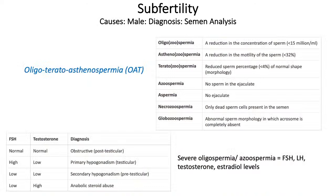Semen analysis helps give a diagnosis. Terminology includes reductions in motility, concentration, and morphology. The most common diagnosis is oligoteratoasthenospermia (OAT) — reduced concentration, motility, and percentage of normal-shaped sperm. If analysis shows severe oligospermia or azoospermia, you test FSH, LH, testosterone, and estradiol levels to explore the underlying cause. For example, low FSH with high testosterone might suggest anabolic steroid abuse.